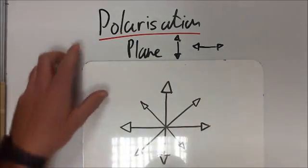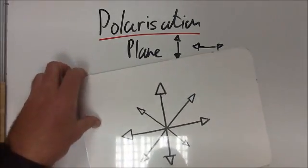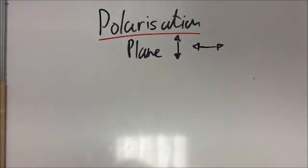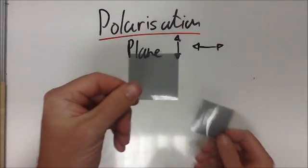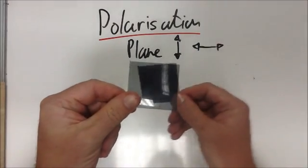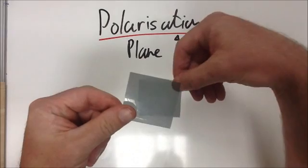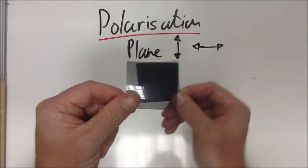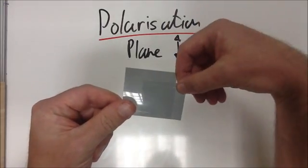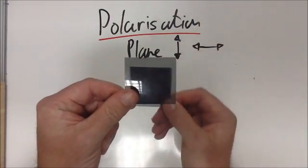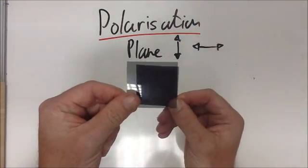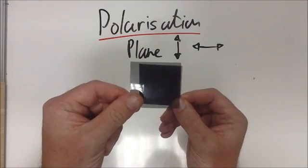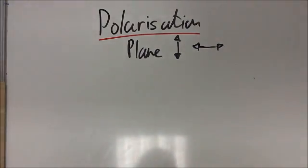To summarize, polarization allows light in one plane to be removed using a filtering process. Thank you very much.